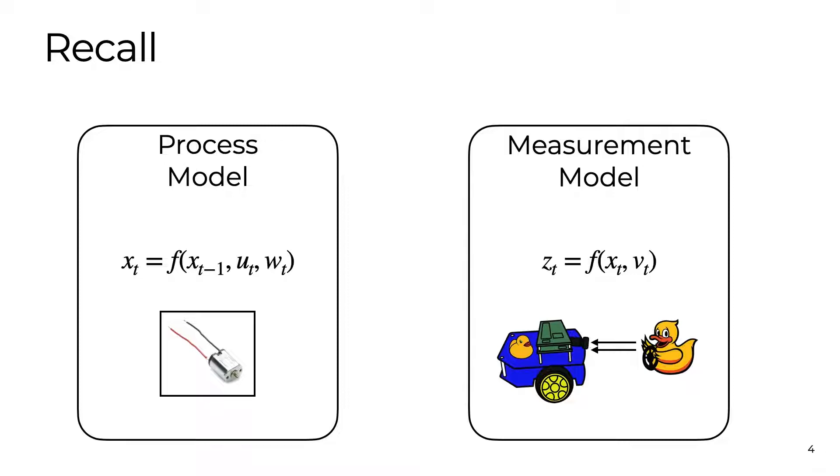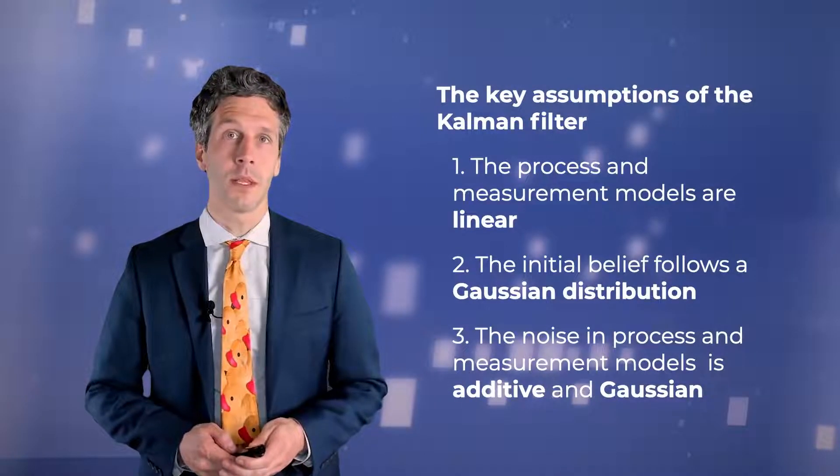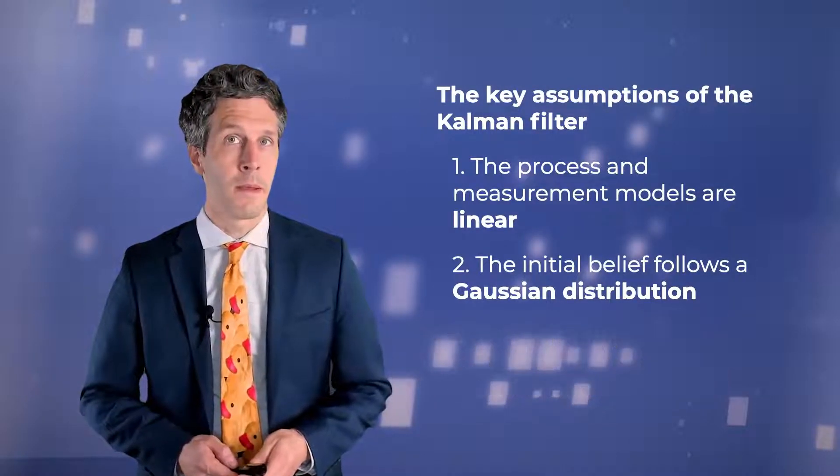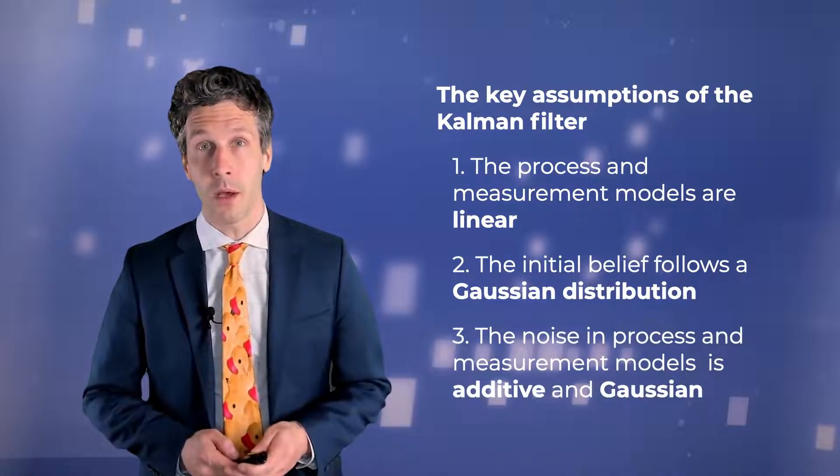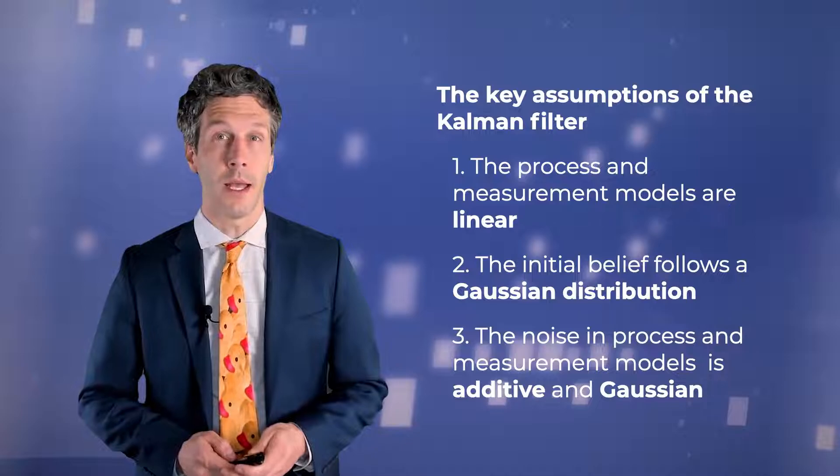Recall that we require two probabilistic models to perform recursive estimation: the process model and the measurement model. The Kalman filter assumes that these models are linear, that the initial belief follows a Gaussian distribution, and that the noise models are additive and zero mean Gaussian.